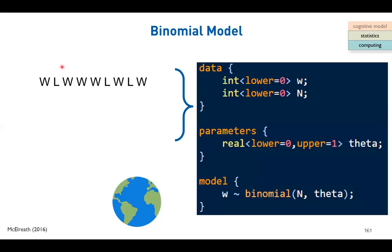We have the data: nine experiments and six water observations. This follows a binomial function, and we were trying to find the posterior distribution of the unknown parameter p or theta. The bigger picture is we have the data and want to solve the unknown parameter. We could do numerical integration, grid approximation, or Markov Chain Monte Carlo (MCMC) to find the shape of the posterior distribution.